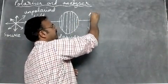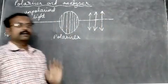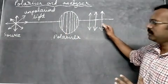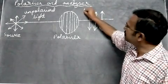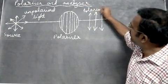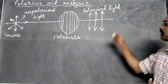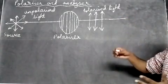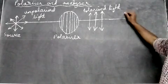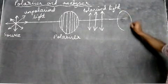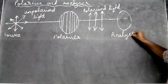So only the light rays vibrating vertically can pass through — it's like a gate. The light coming out is called polarized light. We must then check whether the light coming out is polarized or not. For that we have something called an analyzer, which is similar to the polarizer — again a piece of plastic. This we call the analyzer.